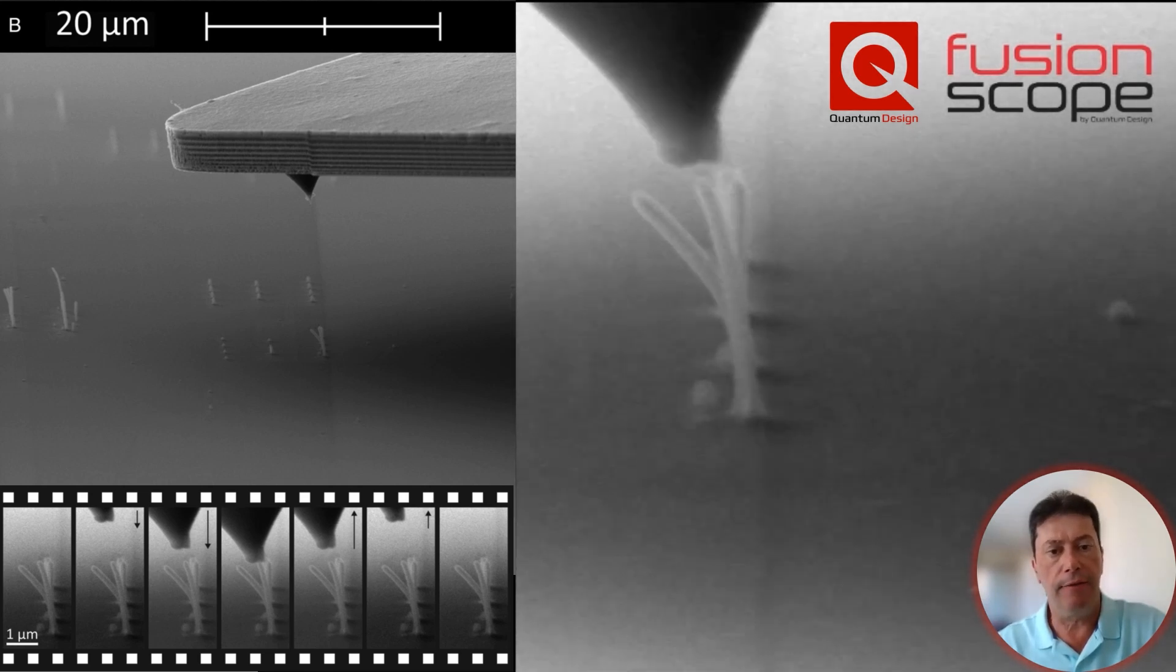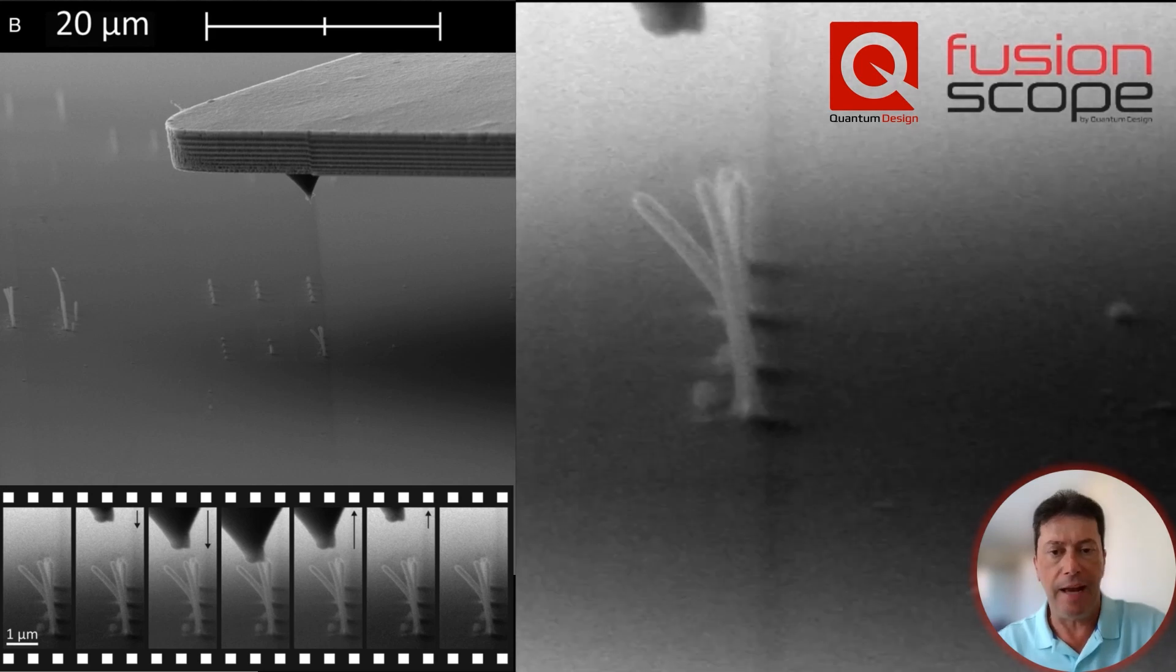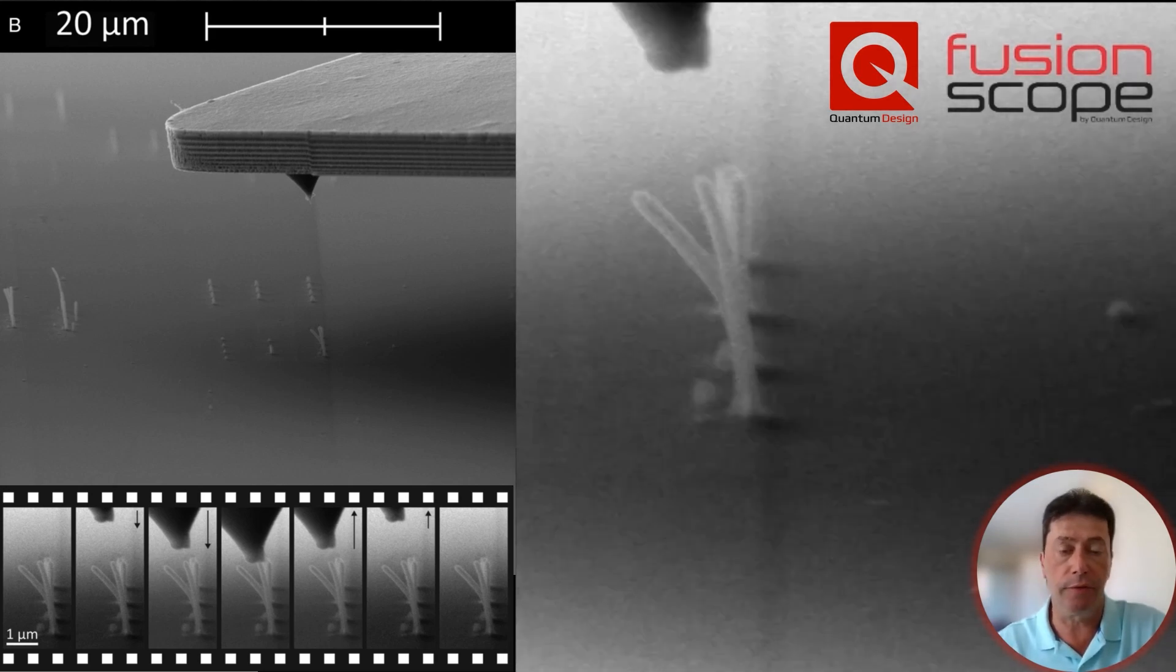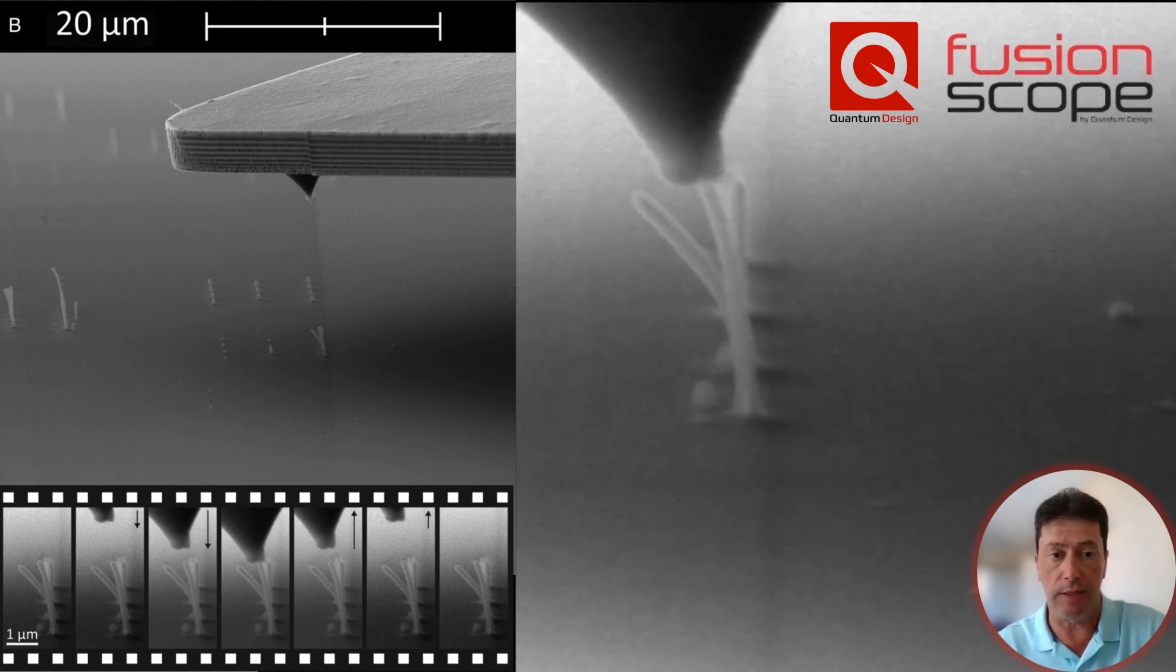Using an AFM cantilever as a force sensor, the nanostructure is a nanoplatinum pillar printed on a silicon surface using a focused electron beam induced deposition technique.